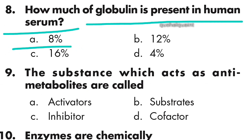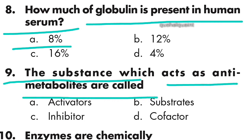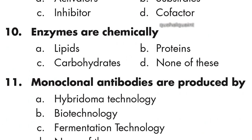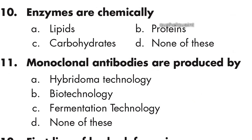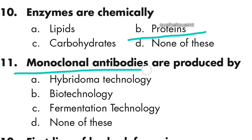Question 9: The substance which acts as anti-metabolites are called inhibitors, option C is right. Question 10: Enzymes are chemically proteins, option B is right.